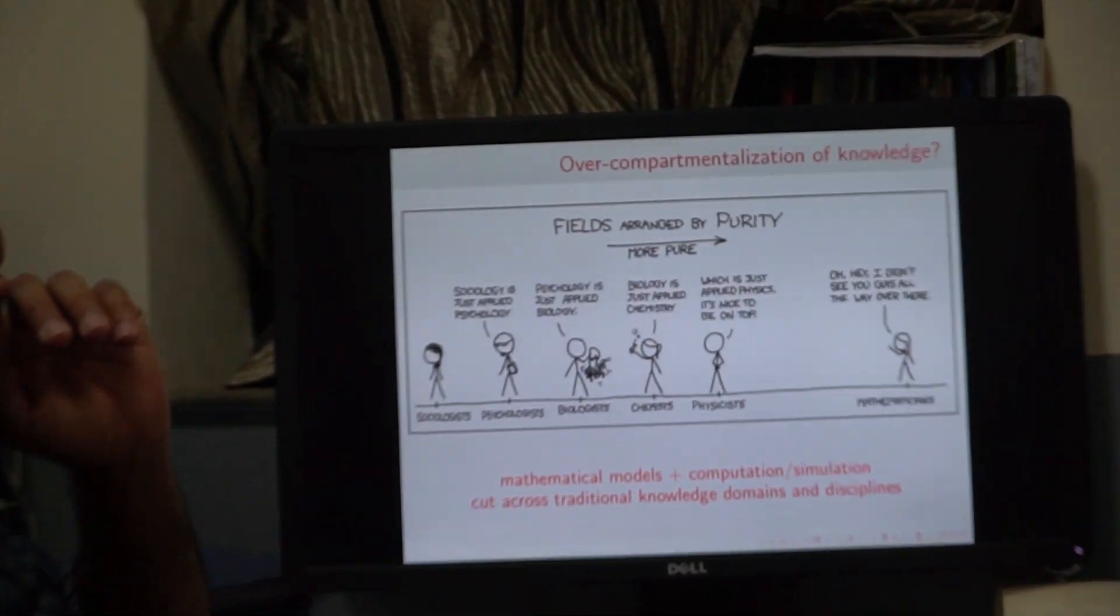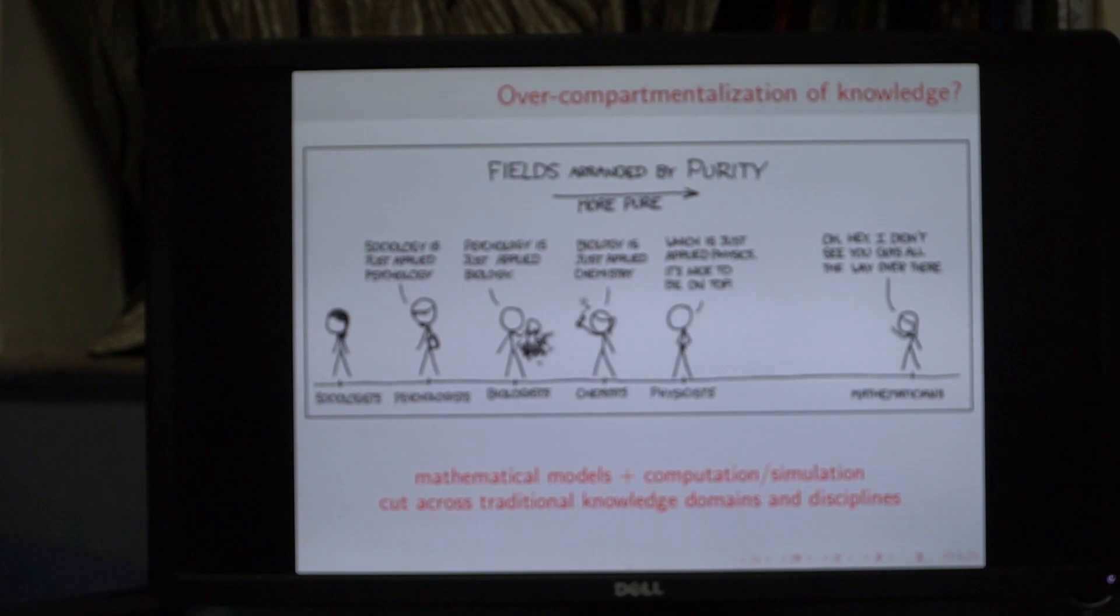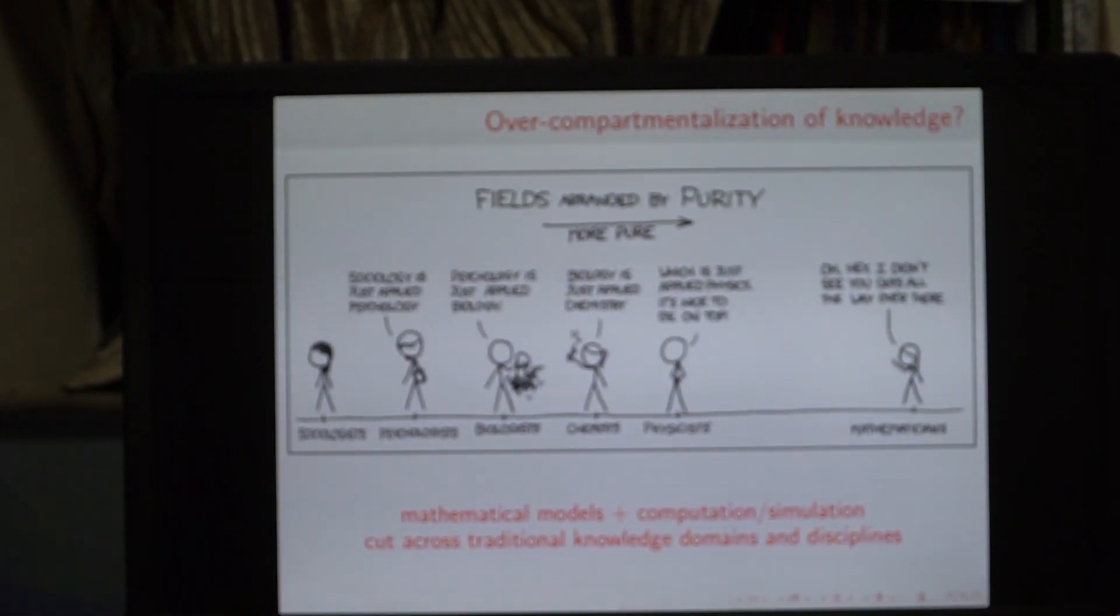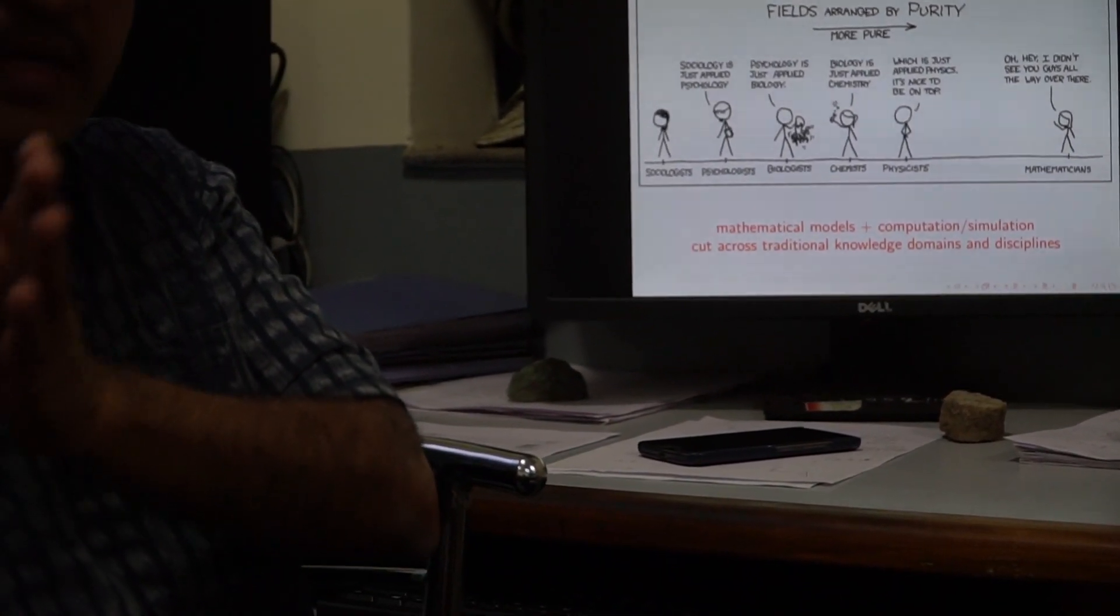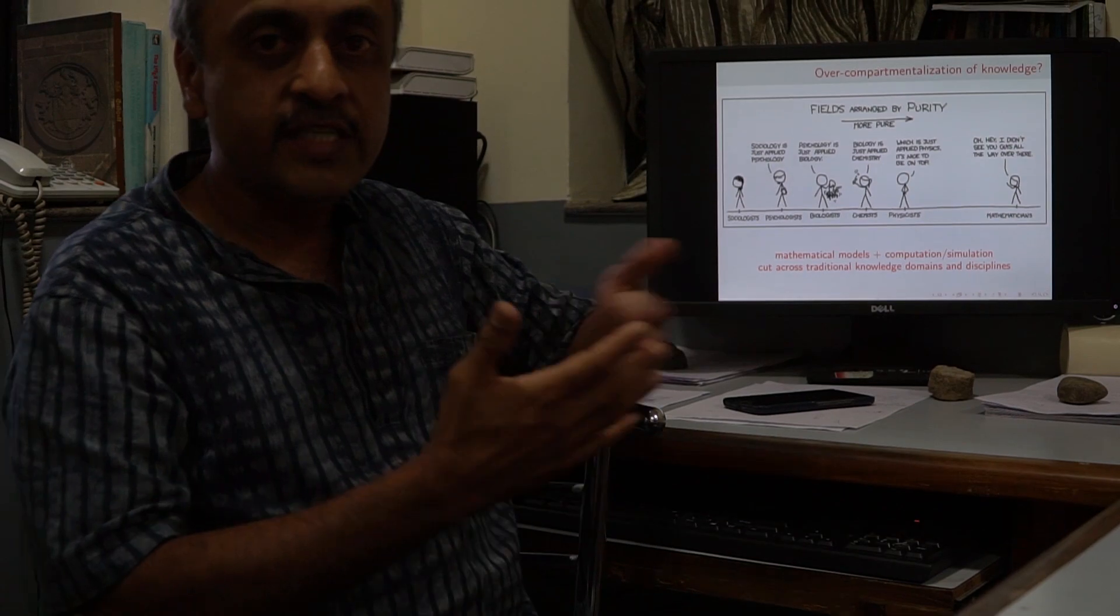Here is another phenomenon which probably is less relevant these days than it was maybe 20 years ago, 30 years ago. That knowledge was compartmentalized as physics, chemistry, biology, psychology, sociology, economics, so on and so forth. And then mathematics stood apart, especially pure mathematics. So this is a very perceptive comic, again coming from XKCD. Mathematical models, mathematical modeling and computation and simulation is what really cuts across all this spectrum of knowledge disciplines. And that way it can build bridges across different domains of knowledge.